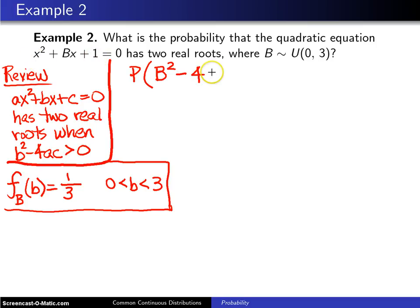which is 1, times c, which is 1, is greater than 0. If you add 4 to both sides of the inequality, you get the probability that b squared is greater than 4. That is the same as the probability that b is greater than 2.